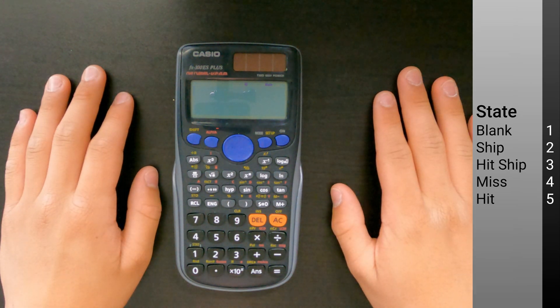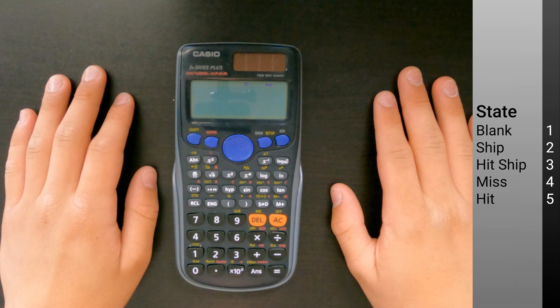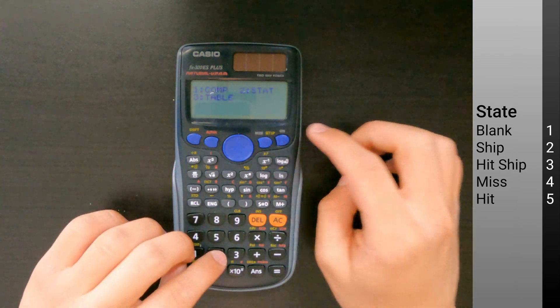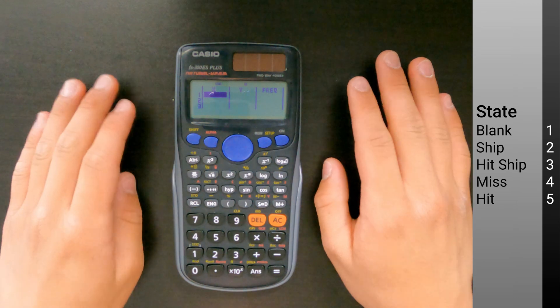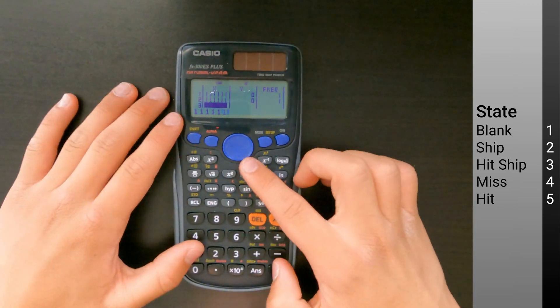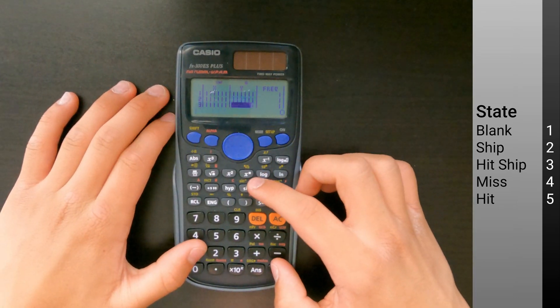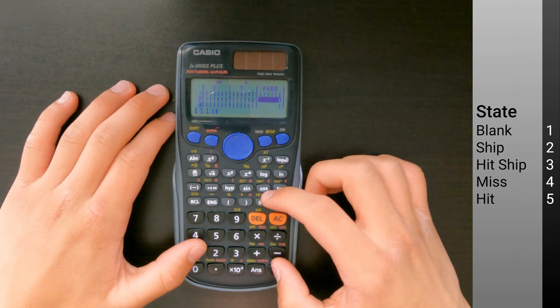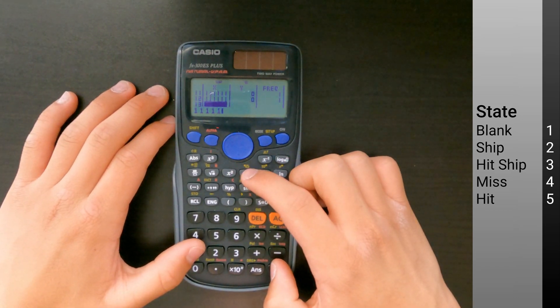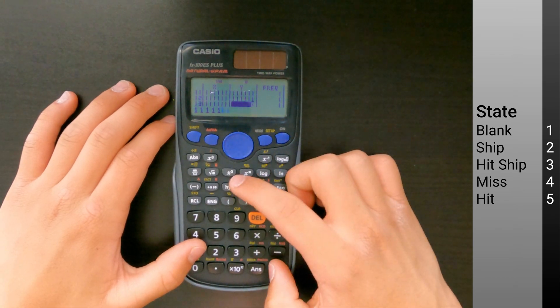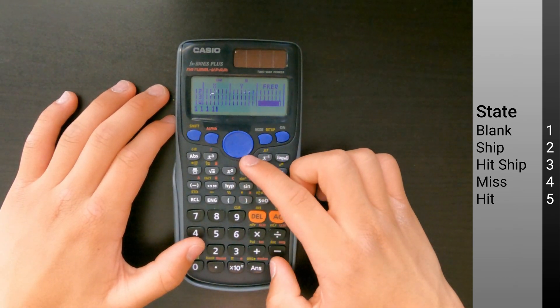Battleship is a classic game that you can now play on your calculator. To start, go into Statistic 2 mode. Fill rows one through six with ones. This will be used by player one. Fill rows seven through ten with a zero, and fill rows eleven through sixteen with ones. This will be used by player two.